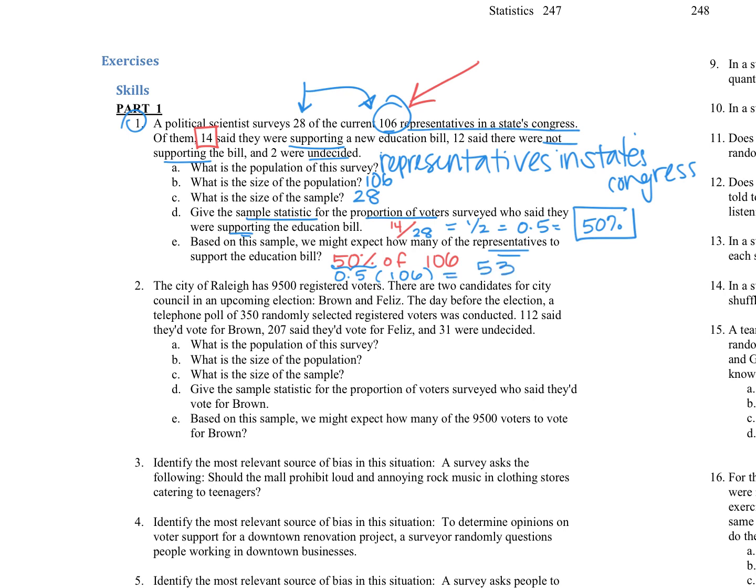So we might expect about 53 people to also support that bill of the 106. For question number two, very similar here, we're looking at the city of Raleigh that has 9,500 registered voters. There are two candidates for city council in an upcoming election. There's Brown and Feliz. The day before the election, there's a telephone poll of 350 randomly selected registered voters. Of those, 112 said they'd vote for Brown, 207 said they'd vote for Felix, 31 undecided.